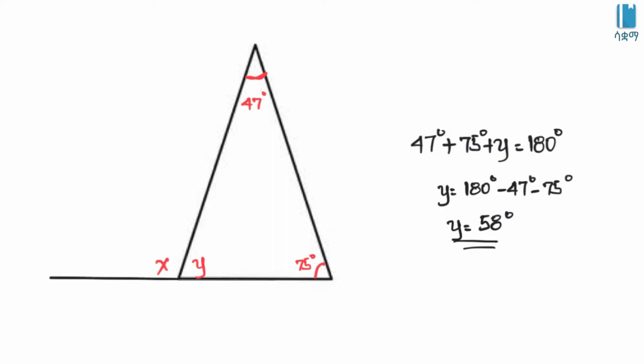Y is equal to the sum of the two remote interior angles of the triangle. The exterior angle of the triangle is equal to the sum of the two remote interior angles of the triangle. This angle is related to the remote interior angles.